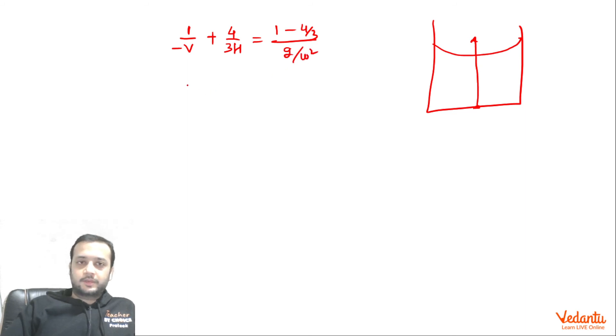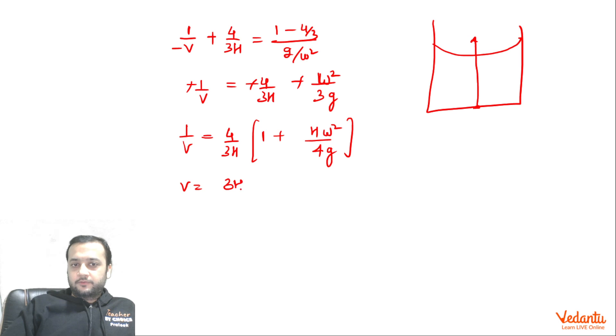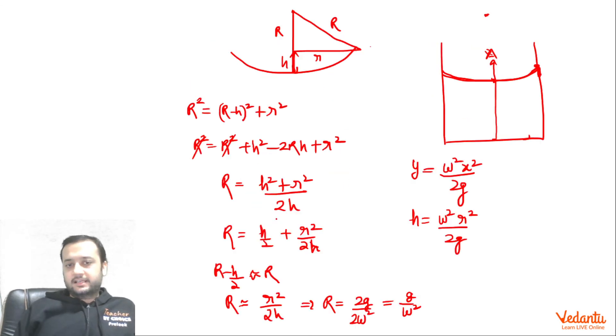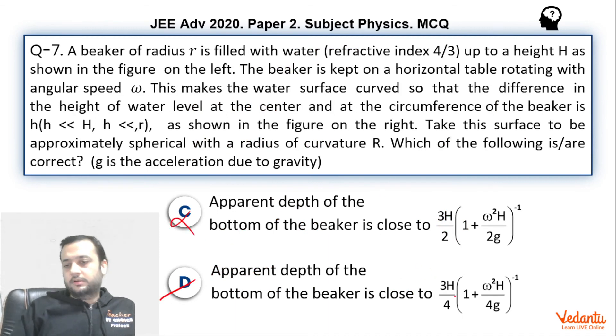So let us see what we are going to get. -1/v = -4/(3H) - 1/(3g/ω²), which becomes -1/(3gω²). So 1/v equals, minus will cancel out. If we take 4/(3H) common just so that we can get the options correctly, this will become 1 and 3 will go outside. So this will become 4ω²H/(4g). If you bring H here, 4 will cancel, ω²H/(3g). So this becomes v = 3H/4 × [1 + ω²H/(4g)]^(-1). And this is exactly what option D is, hence C is wrong. 3H/4 into [1 + ω²H/(4g)]^(-1).